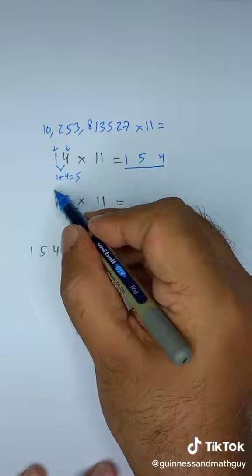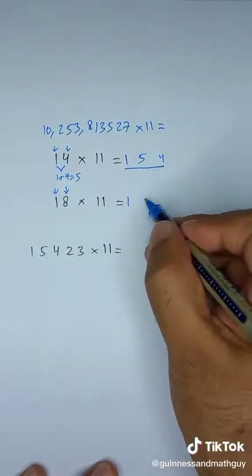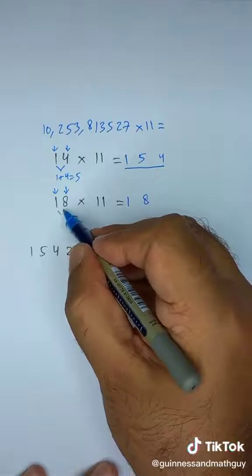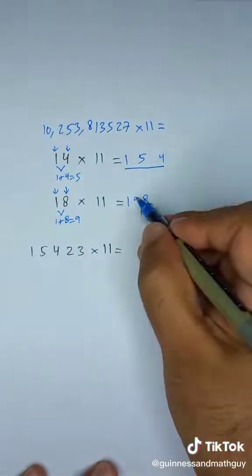Here's the same thing. You write the first number, then you write the last number. And you add these two: 1 plus 8 is 9. Here is our answer.